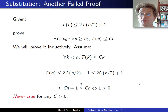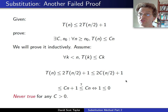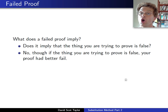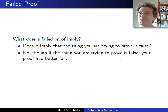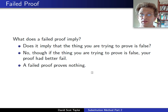Now, as I was saying last time, what does a failed proof imply? Does the failed proof that I just gave for t(n) is O(n) imply that t(n) is not O(n)? No, it doesn't. If the thing you're trying to prove is false, the proof had better fail — if your proof goes through and proves something false, something is wrong with your method of proof. A failed proof proves nothing.